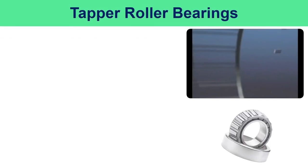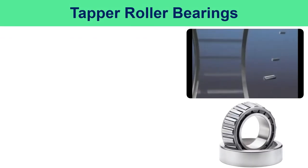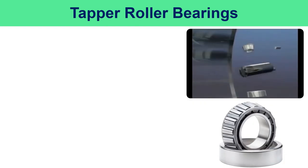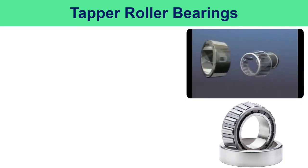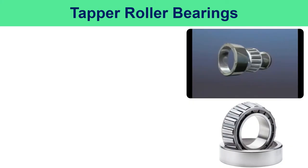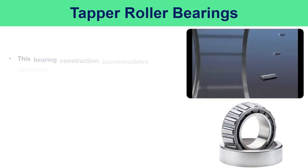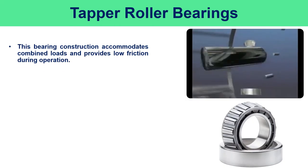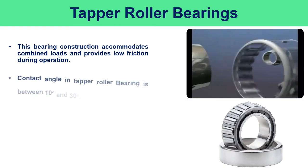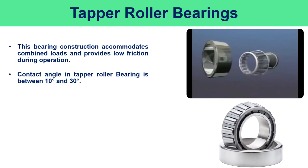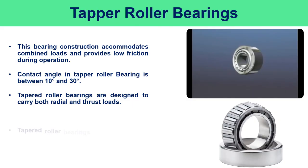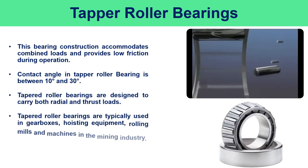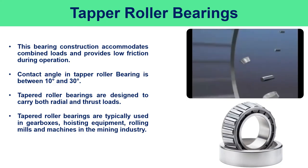A taper roller bearing consists of two separate parts: an inner ring with a set of tapered rollers secured by a steel cage called the cone assembly, and an outer ring called the cup. The cup and cone are mounted separately — the cup in the housing and the cone on the shaft — and only when assembled together do they form a complete bearing. This construction accommodates combined loads and provides low friction during operation. The contact angle is between 10 and 30 degrees. Tapered roller bearings are used in gearboxes, hoisting equipment, rolling mills, and mining machinery.